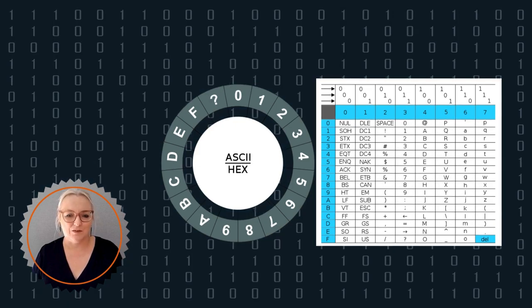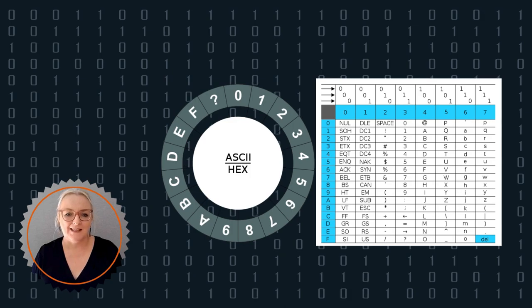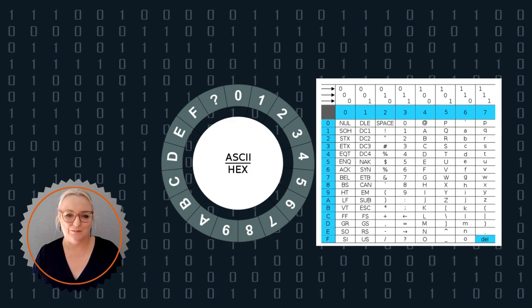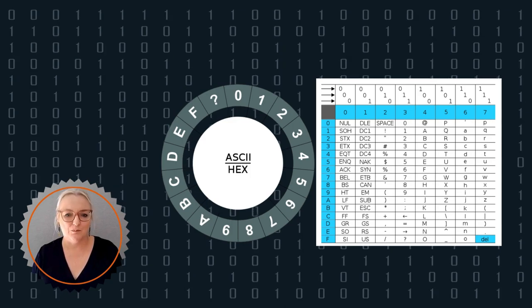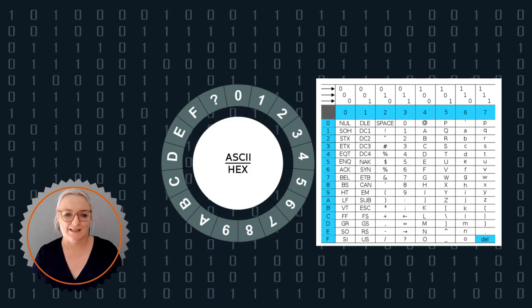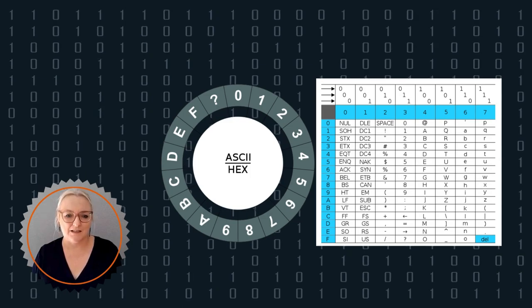Each character, whether it's a letter, a number, or a symbol, is assigned a unique binary code. The computer knows how to interpret the binary code because of the context in which the data was sent.